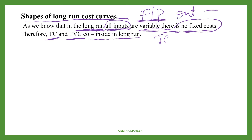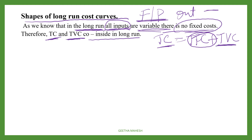We know that total cost is equal to total fixed cost plus total variable cost. But in the long run, there won't be any total fixed cost. So total cost will be exactly equal to total variable cost — total variable cost will coincide with the total cost in the long run.